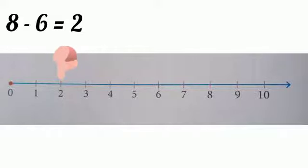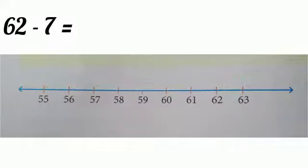Let us see another question. 62 minus 7. Here also we should draw a number line first. No need to write from 0 because we are subtracting 7 from 62. So, just write from 55 to 62.